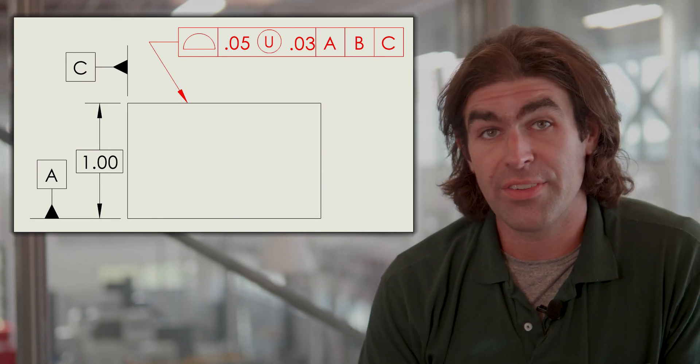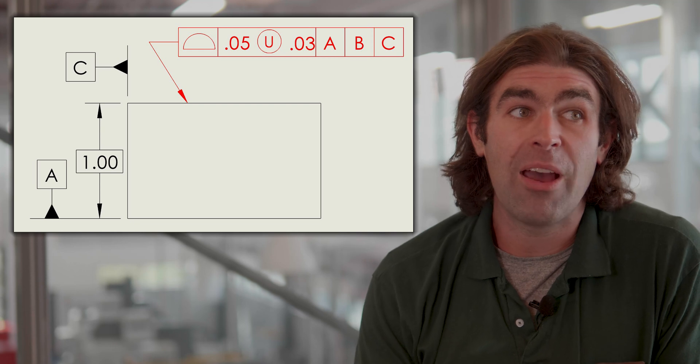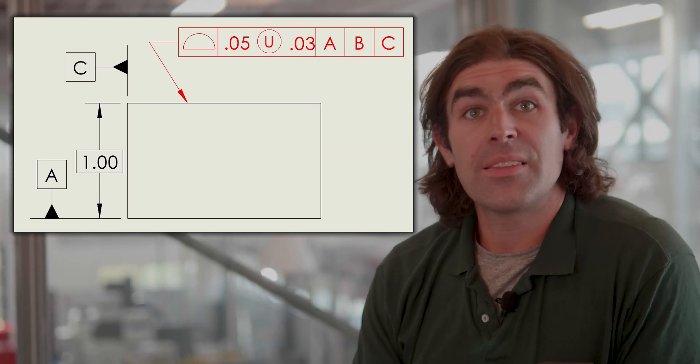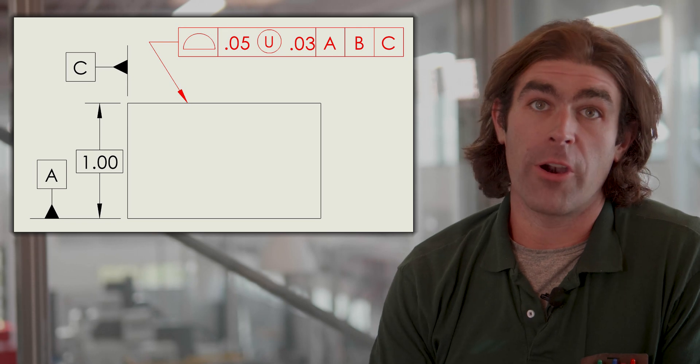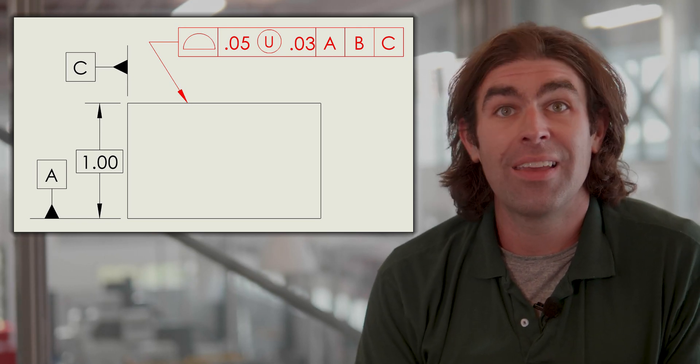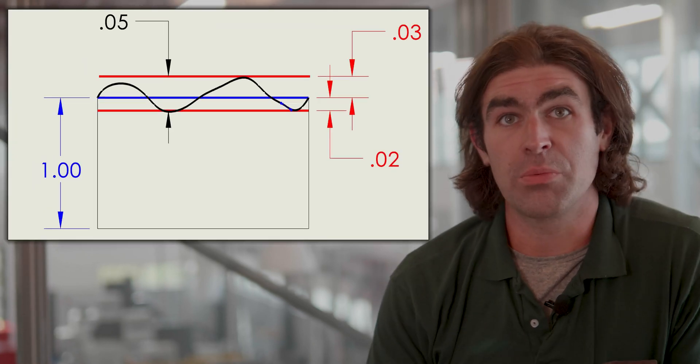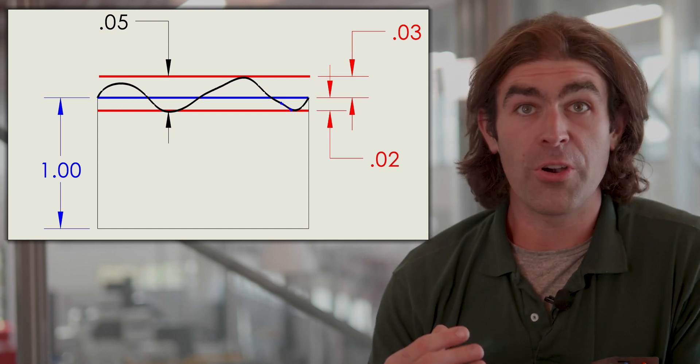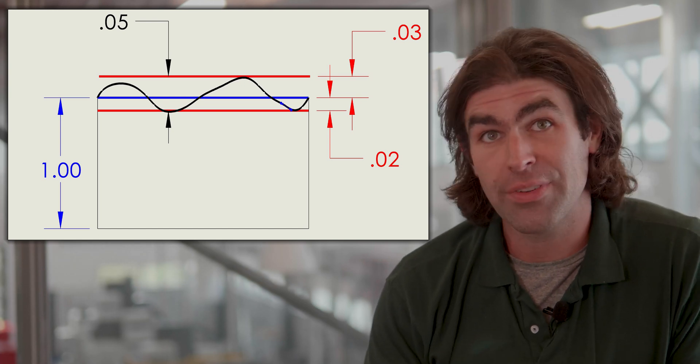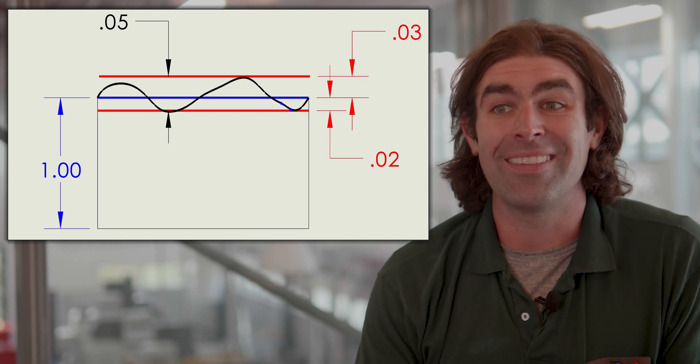Now the next is the unequally disposed profile tolerance. What this does is set the tolerance zone unequally about that true profile. So the way to read it, we have the same deal going on. We have 50 thousandths of total tolerance, the U symbol, but now we have 30 thousandths after it. This is saying that 30 thousandths of that 50 thousandths goes in the direction that would add material to the part. So you've still got the remainder of that 50 thousandths that goes on the other side of the true profile. You essentially just move the tolerance zone unequally about the true profile. So in this case, 30 thousandths of your tolerance is on the outside of the true profile, 20 thousandths is on the inside of the profile.